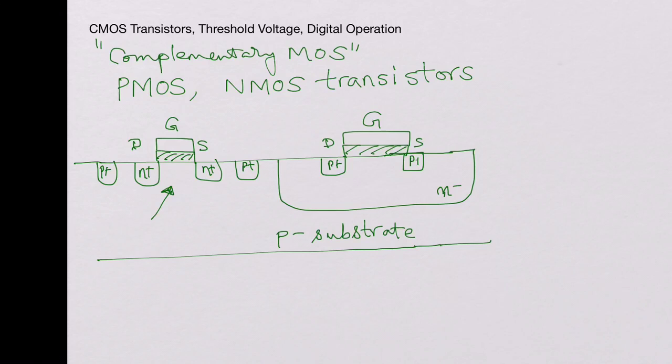Drain and source are interchangeable unless there are some kind of special transistors with special layouts. Now you have N-plus connections for the bulk of the PMOS device. The bulk of the PMOS device is made up of N-minus material, whereas the bulk of the NMOS device is made up of P-minus material. This is NMOS device and this is PMOS device here.